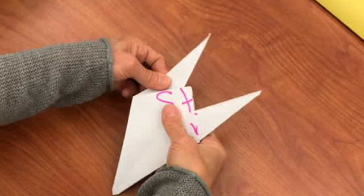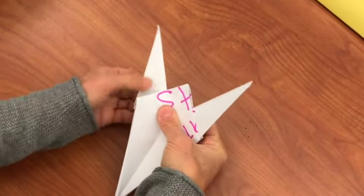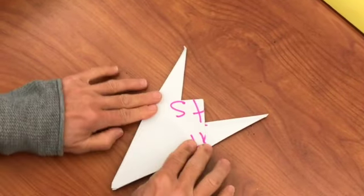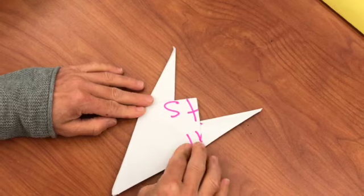Do the same with the other ear, pull it down, crease it so this lines up. Now it really looks like a fox.